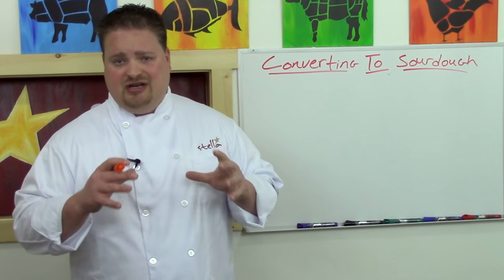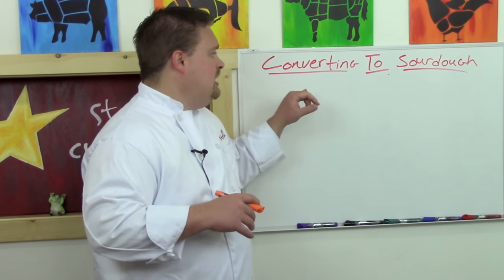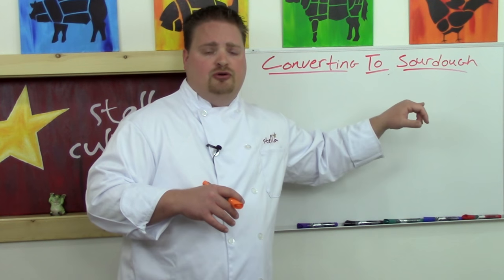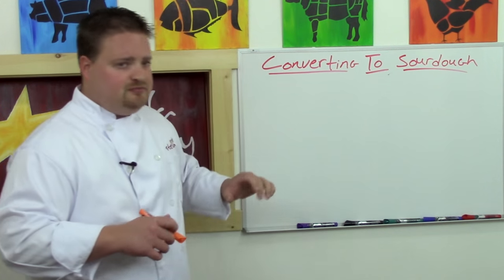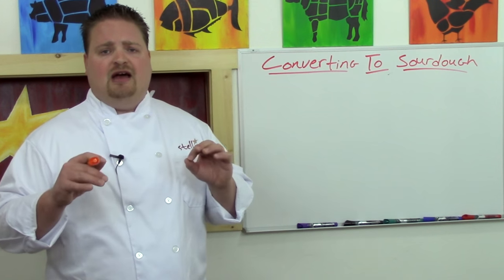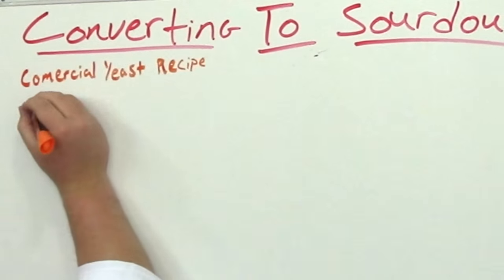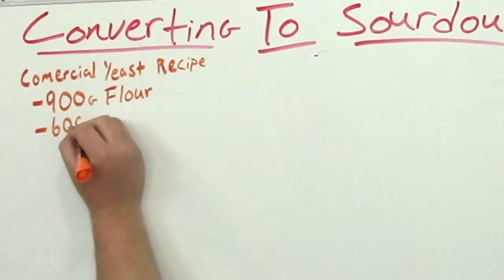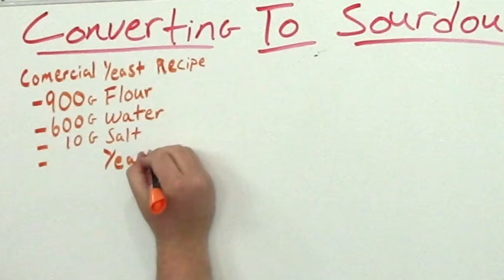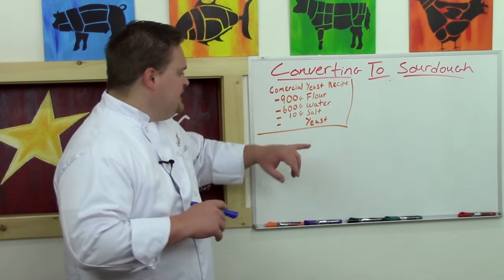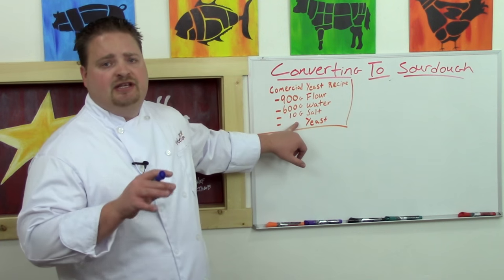To convert to a sourdough starter from a commercial yeast recipe, let's assume for a second that we have the following recipe: 900 grams flour, 600 grams water, 10 grams salt, and yeast.